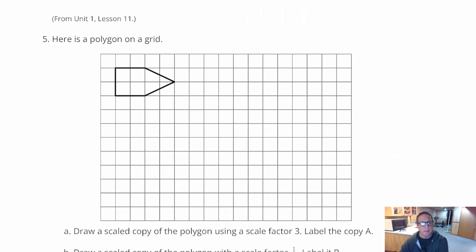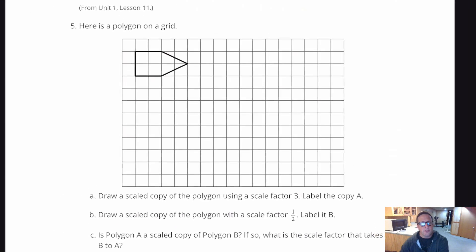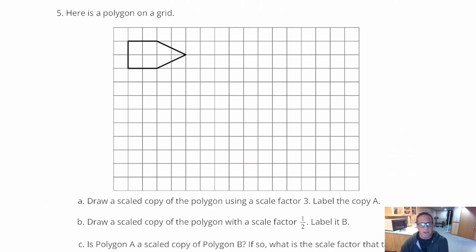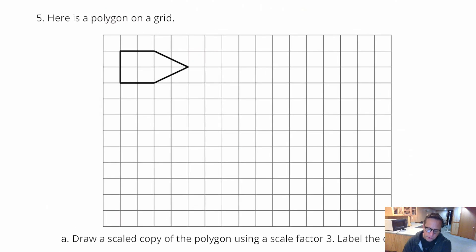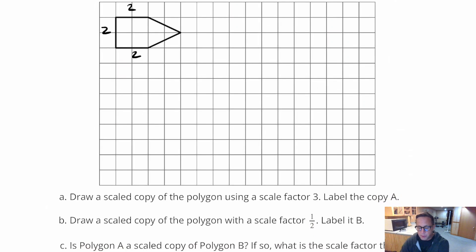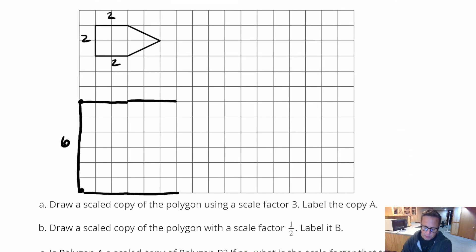Alright so here's a polygon on the grid. So for number 5, draw a scaled copy of the polygon using a scale factor of 3. So that means we're going to multiply all the side lengths by 3. So this is 2, these are all 2. Alright and so we're going to multiply those by 3 so 2 times 3 is 6. So that's what I'm going to do. I'm going to do 2, 3, 4, 5, 6. I'm going to just use this space right here. That's 6 and I'm going to make this 6. There's 3 and there's another 3. There's 3 and another 3.